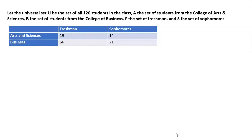Now let's look at an application problem. Let the universal set U be the set of all 120 students in the class. A is the set of students from the College of Arts and Science, B is the set from the College of Business, F is the set of freshmen, and S is the set of sophomores. Our universe — all the elements we are considering — is the 120 students in the class.